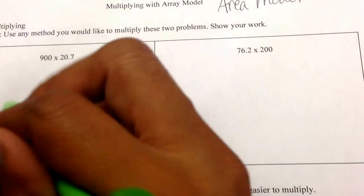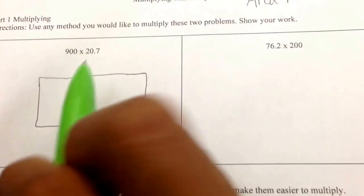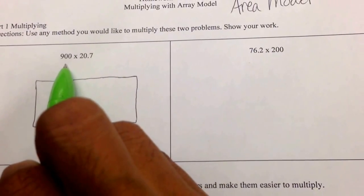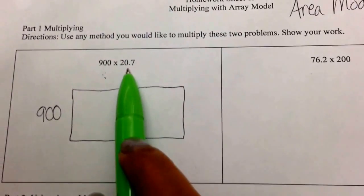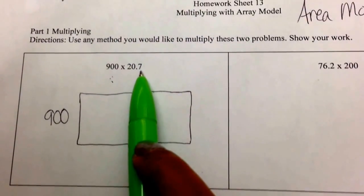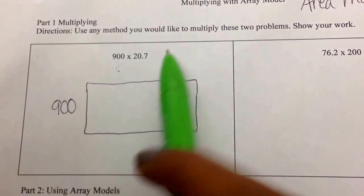I'll start with this one first. First things first, I'm going to draw an array, which is just a rectangle. I have a nice friendly number here at 900, so I'm going to write it down. And my second number, 20 and 7 tenths, I want to decompose it into two friendlier numbers.